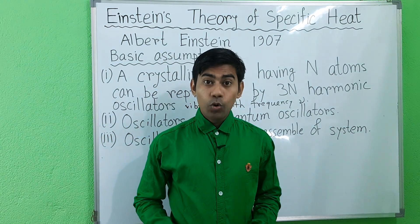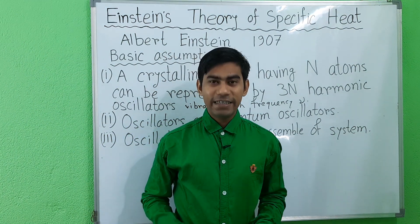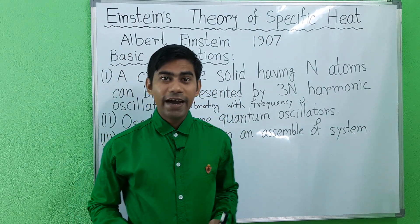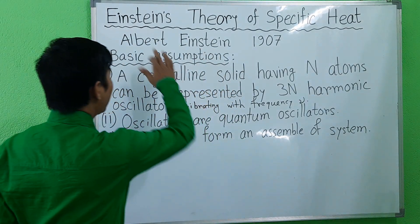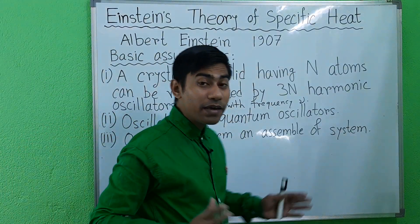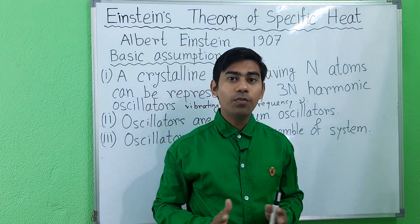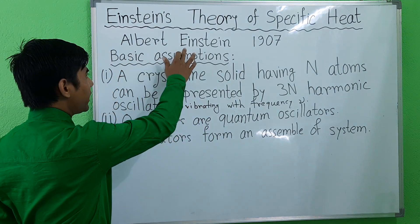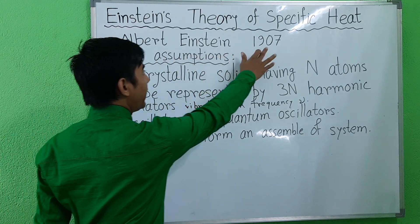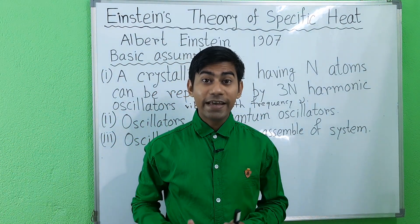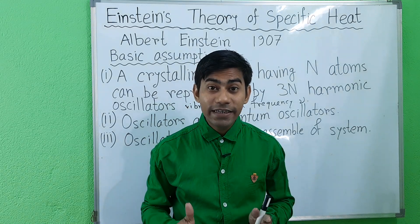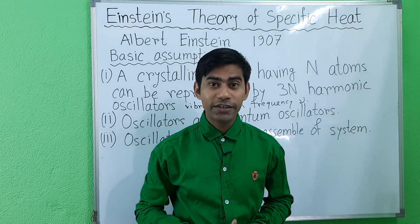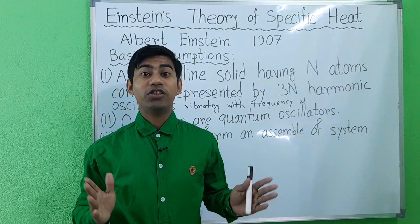Hello everyone, welcome to this lecture. I am Om Landes. Today I will discuss Einstein's theory of specific heat of solids. Albert Einstein in 1907 first explained the variation of the specific heat of a solid with temperature on the basis of quantum theory.